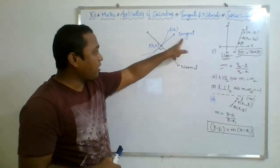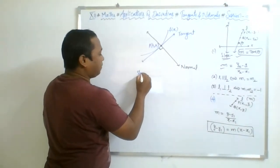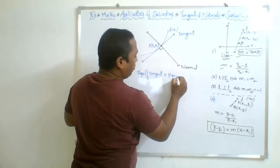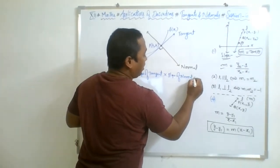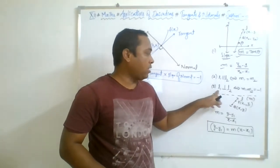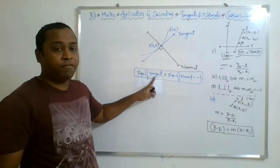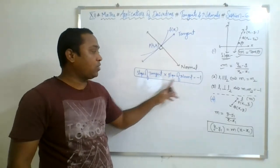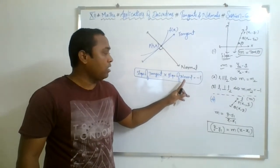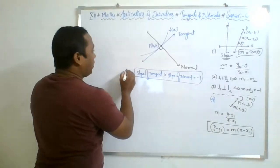So basically the tangent and the normal are two straight lines which are perpendicular to each other at a common point on the curve. Hence the slope of tangent into the slope of normal is equal to minus 1, as the straight line concept states: if two lines are perpendicular, the product of their slopes equals minus 1. When you know the slope of the tangent, you will be able to find the slope of the normal using m1 into m2 equal to minus 1.